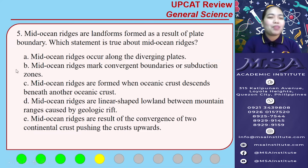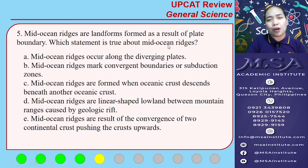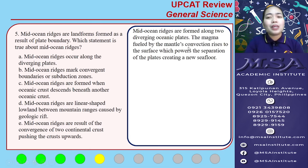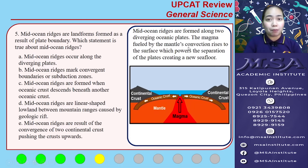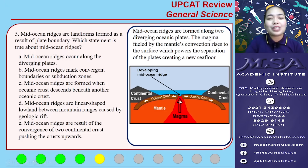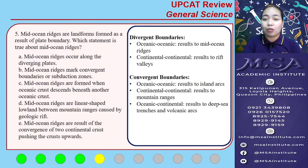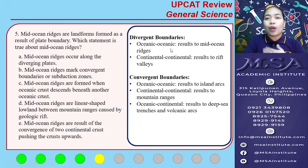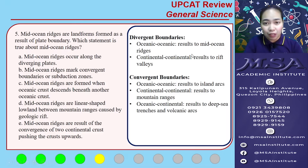Number five: mid-ocean ridges are landforms formed as a result of a plate boundary. Which statement is true about mid-ocean ridges? Mid-ocean ridges are formed along two diverging oceanic plates — it marks two oceanic plates moving away from each other, which is called seafloor spreading. The magma, fueled by the mantle's convection, rises to the surface, powering the separation of the plates and creating a new seafloor. For plate boundaries, we have divergent boundaries, when two plates move away from each other, and here are the landforms that can be formed.